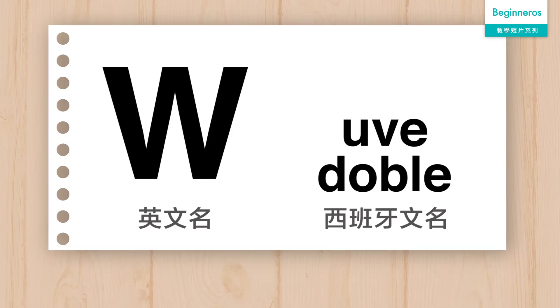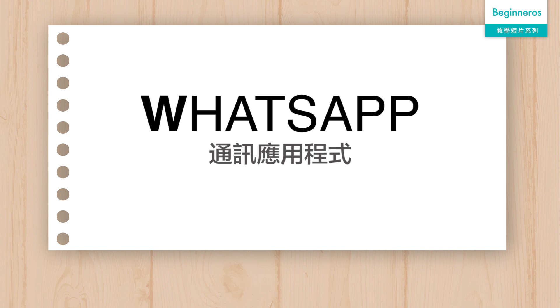Next is W. In Spanish, W is called Doble Ve. It's not a native Spanish letter, so it's not commonly used. When it does appear, it's usually in loanwords and pronounced like the original language's W.